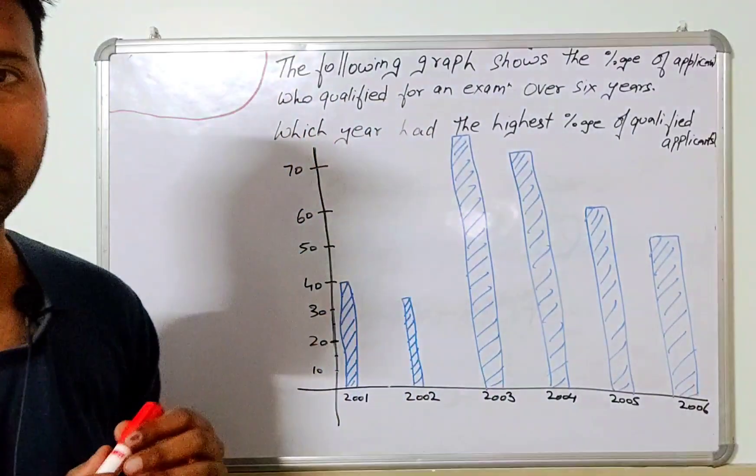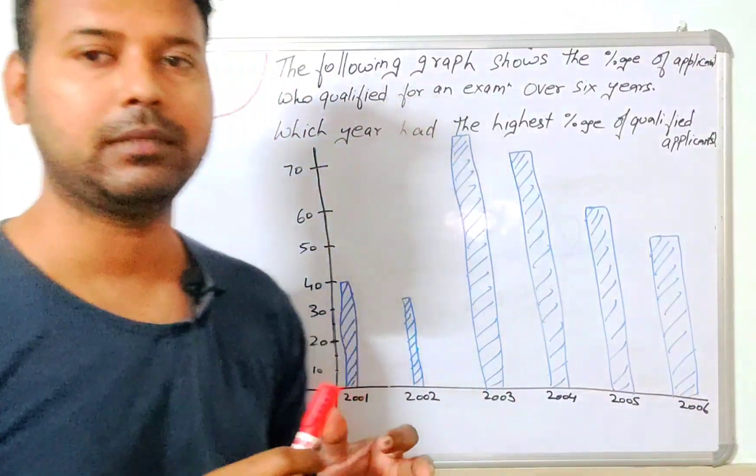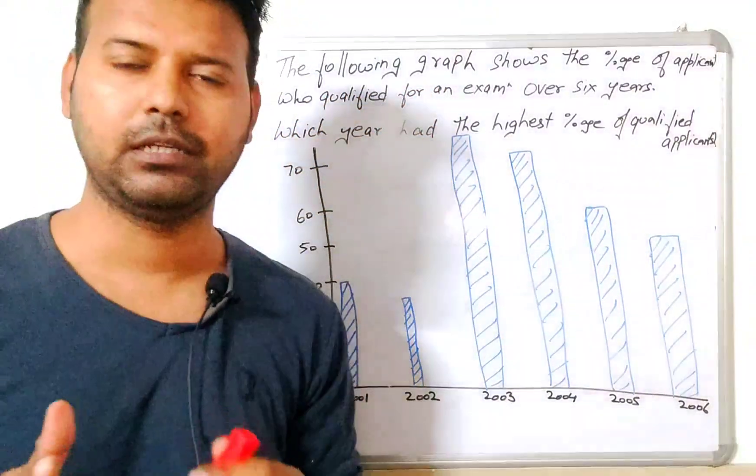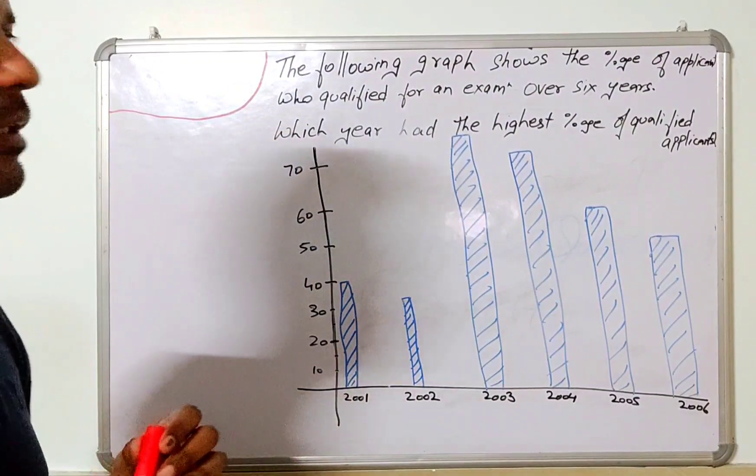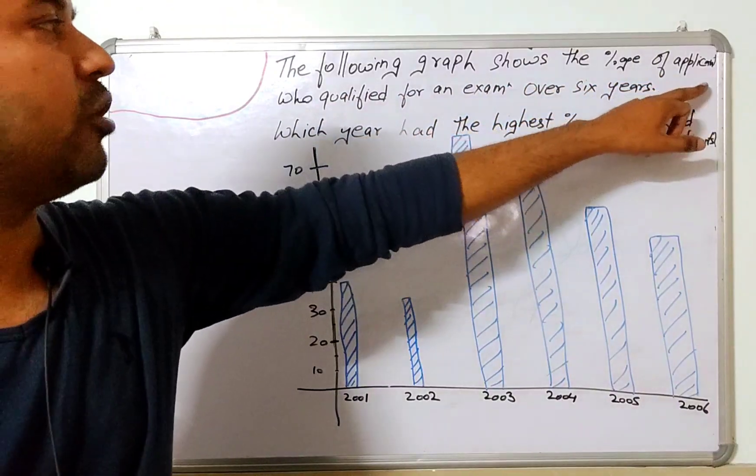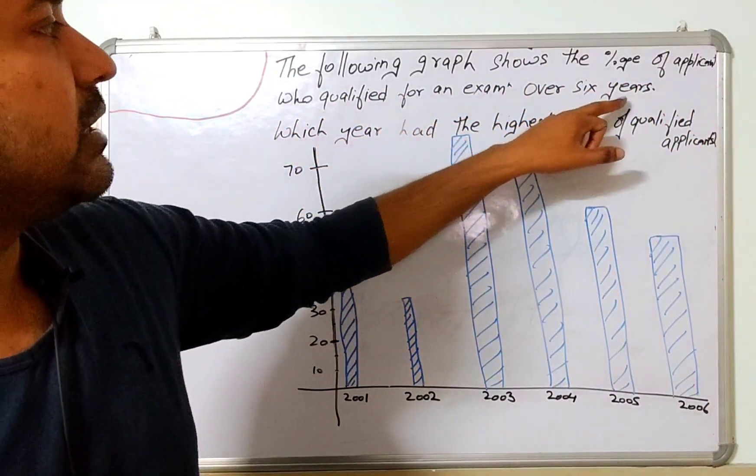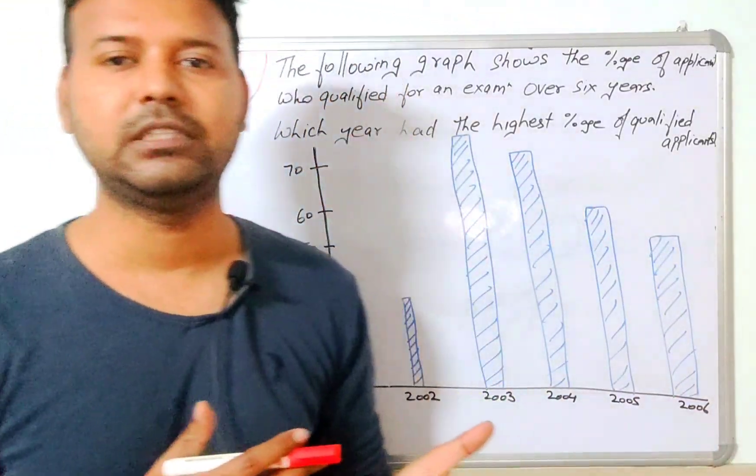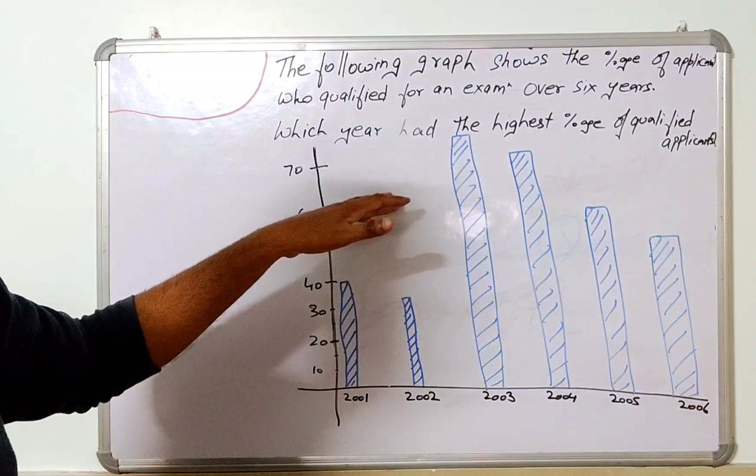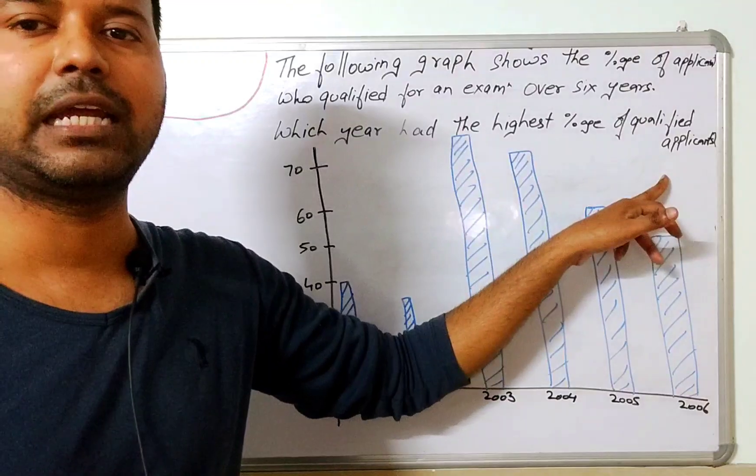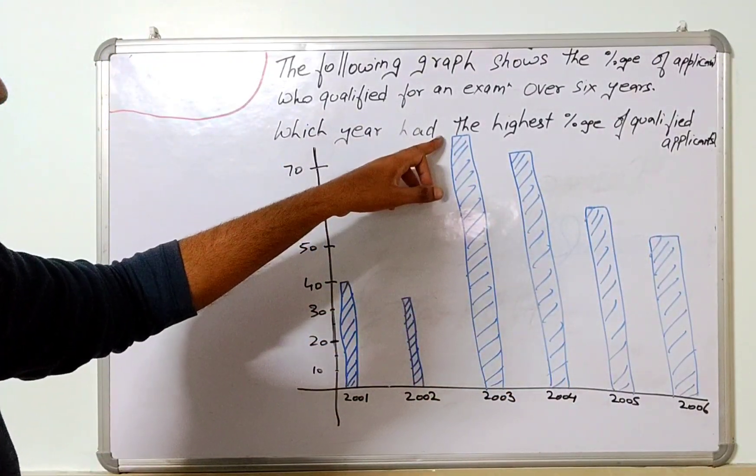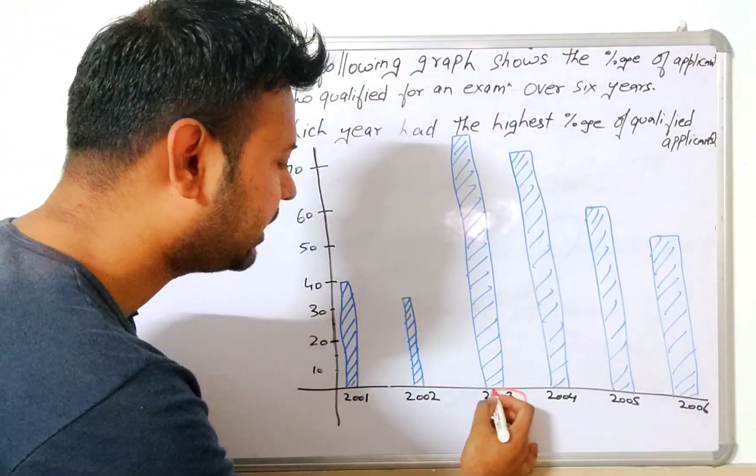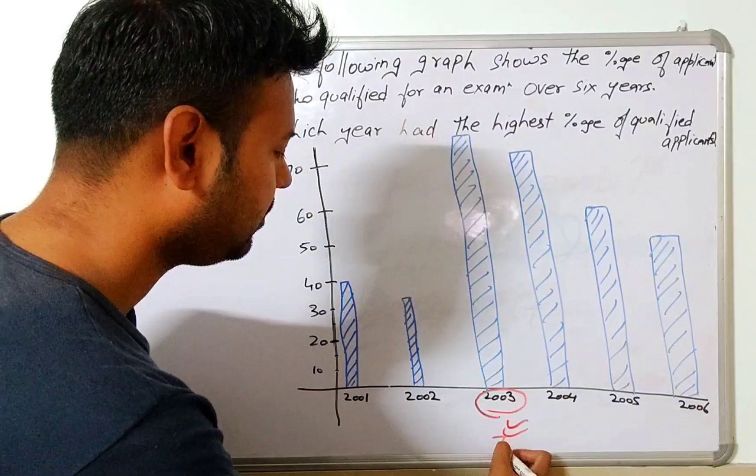So now this type of question came in RRB level examination of BT tests. The question was: the following graph shows the percentage of applicants who qualified for an examination over six years. Which year had the highest percentage of qualified applicants? Please see such type of easy question was there. In this it is simply asking which year had the highest. Easily by seeing the graph we can say that yes, this is having the highest percentage. In all these graphs, this is the highest one of 2003. So 2003 is the correct answer, and it is 75 percentage.